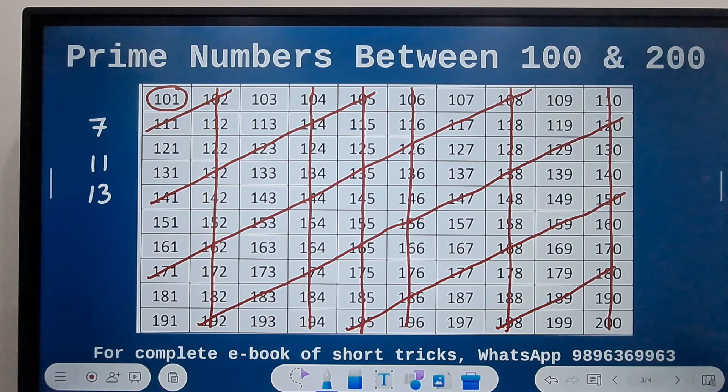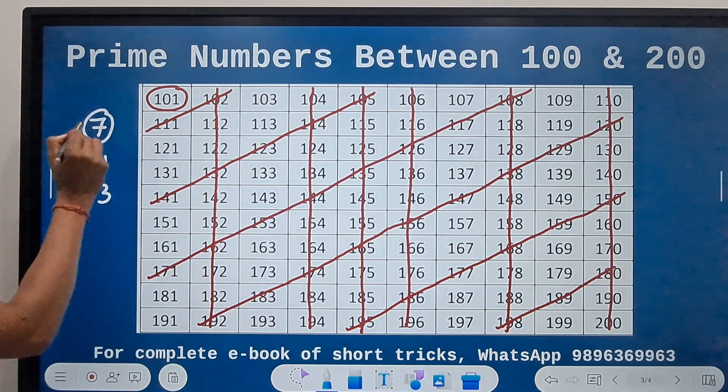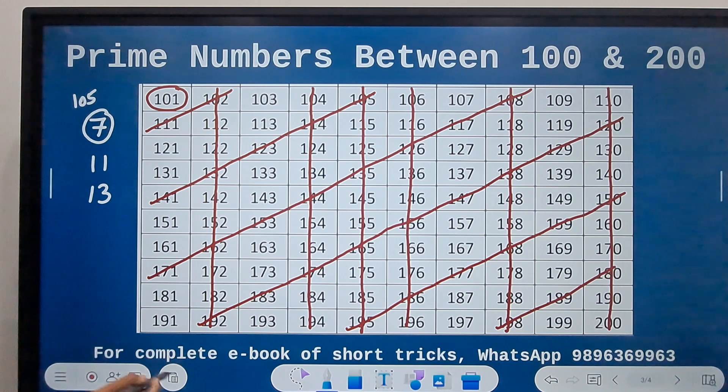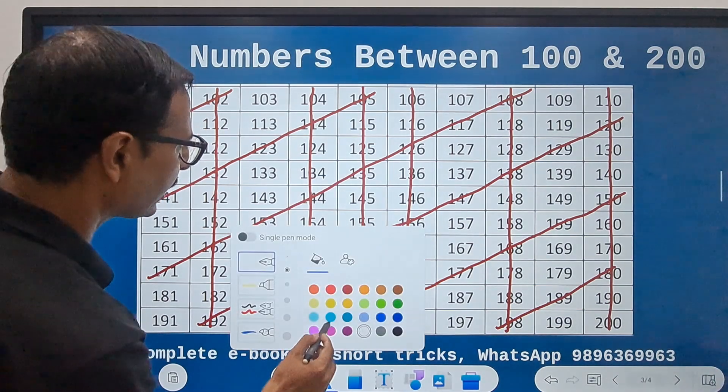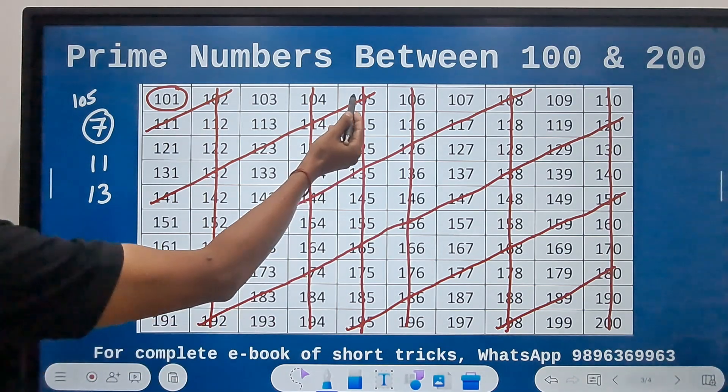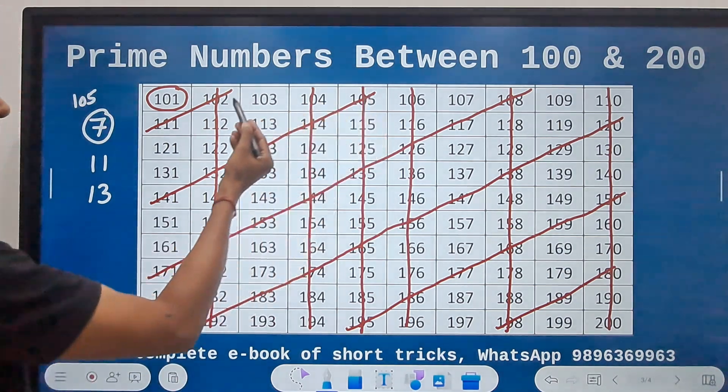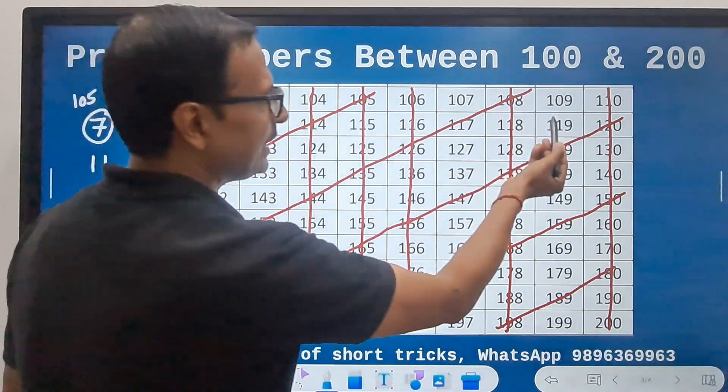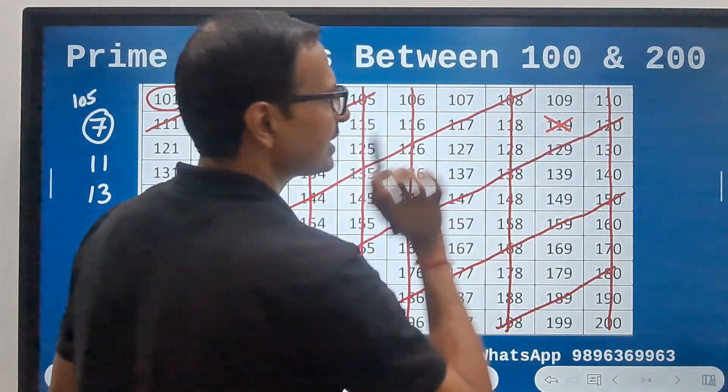So the multiples of 7. You see, 7 times 15 is 105, right? So let's rule out more numbers from this. So 105 is the first multiple of 7. After that 112, 119 here. See, this is a multiple of 7, so rule that out.